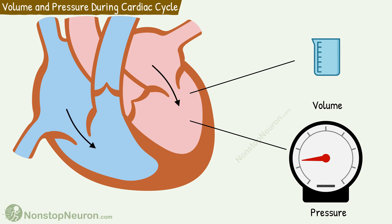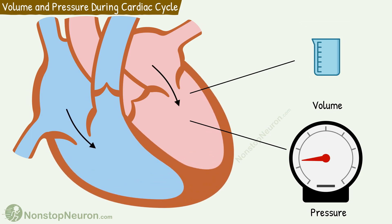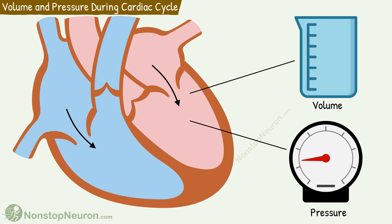As blood flows from the atria into the ventricles, the volume in the ventricles increases. Regarding pressure, initially there is a fall in pressure as the ventricles continue to relax. Eventually, there is some rise in pressure.